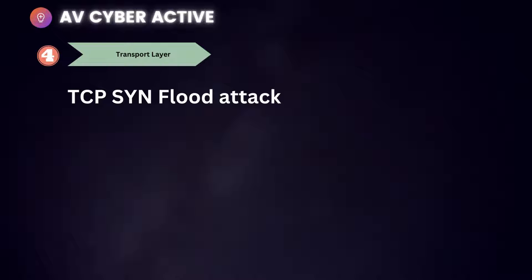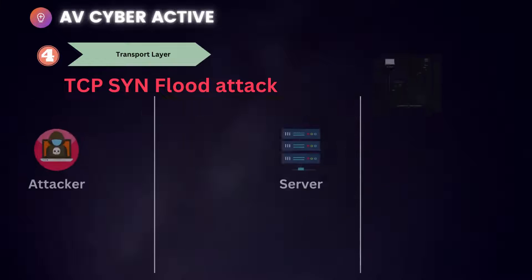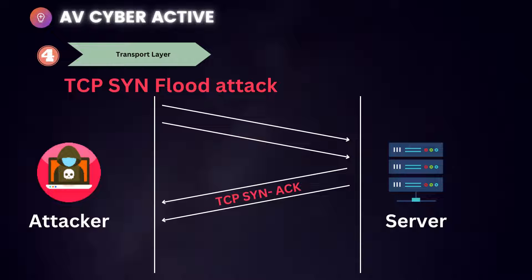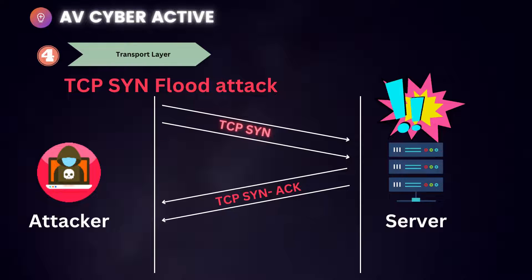TCP SYN flood attack. To understand how this works, one needs to have an understanding of the TCP three-way handshake. In this attack, an adversary sends a huge volume of TCP SYN requests. The target server responds with a TCP SYN-ACK packet and waits for an acknowledgement for a set amount of time. Before the connection times out, another SYN packet arrives, leaving an increasingly large number of connections half open. Eventually the server's connection table overflows and gets filled up, and service to legitimate clients is denied — leading to a denial of service attack.